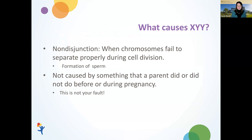What causes XYY? XYY results from chromosomes failing to divide properly during cell division — typically during formation of sperm. If the Y chromosomes fail to separate when making the sperm, this can result in two Y chromosomes in a single sperm, and fertilization can yield an XYY diagnosis in the developing fetus. This is not caused by anything the father did before or during pregnancy — it's not his fault. It's simply a biological mechanism that can occur, relatively common in the formation of sperm and eggs, across the human population.